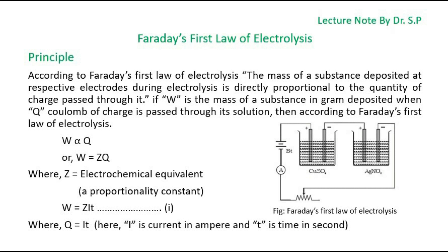Or, W equals ZQ, where Z equals electrochemical equivalent, or a proportionality constant. W is equal to ZIT, where Q is equal to IT; here, I is current in ampere and T is time in seconds.